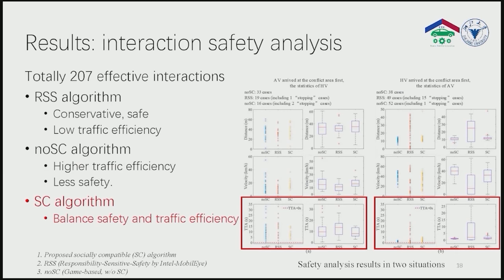We used the time to arrive at the conflict area, that is TTA, as the key indicator of interaction safety. From the statistical results, we found that comparing with the benchmark algorithms, the AV decision algorithm with social compatibility can better balance both safety and traffic efficiency.